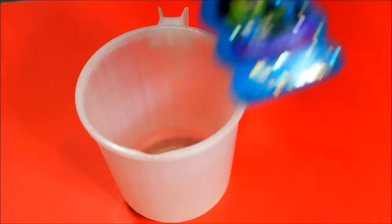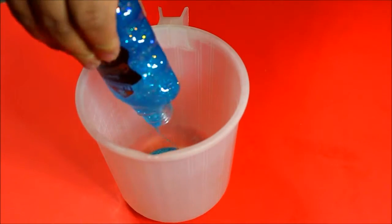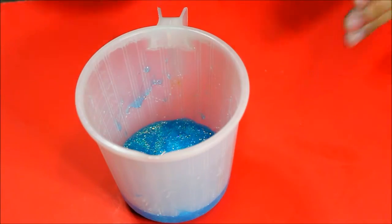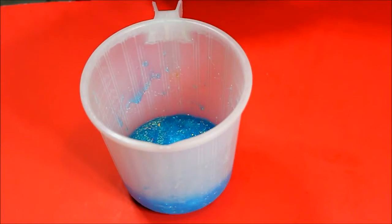I'm going to empty out the contents of the glue container here. I'm starting off with a blue glitter glue. Next, it's completely optional, but I just want a little bit darker blue, so I'm just going to add in a few drops of blue food coloring.